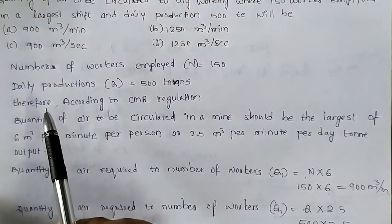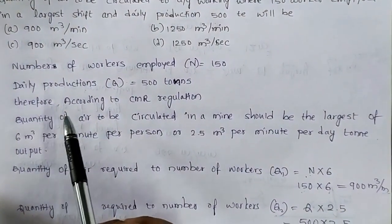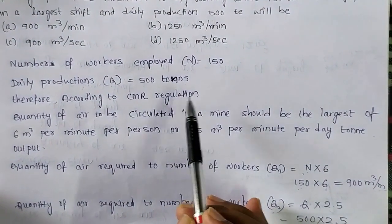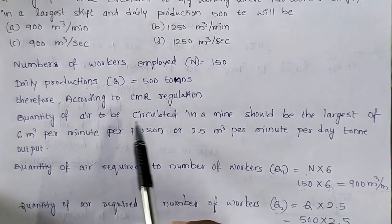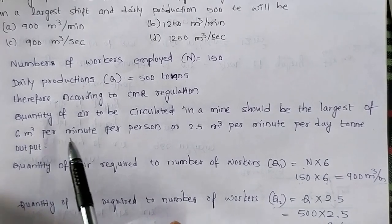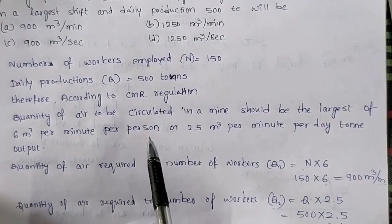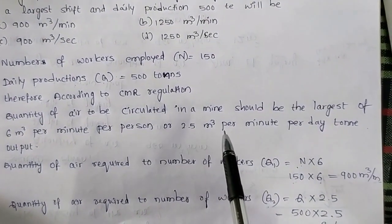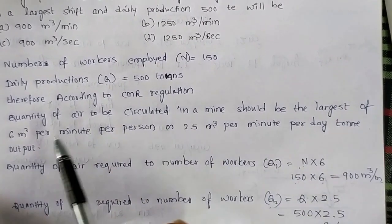Before that, you people know that according to CMR regulation, the quantity of air to be circulated in a mine should be the largest of 6 meter cube per minute per person or 2.5 meter cube per minute per day ton output.